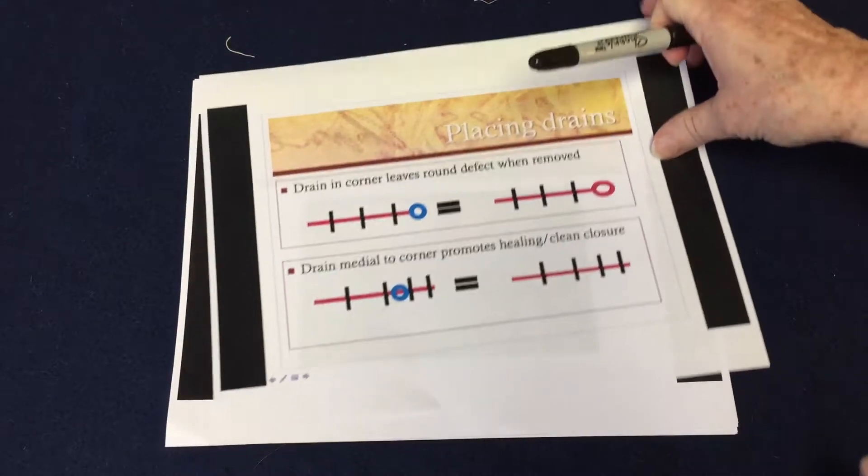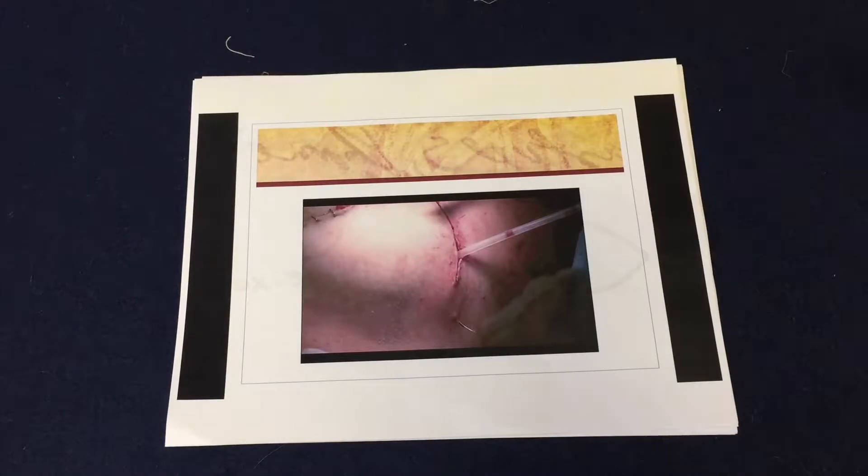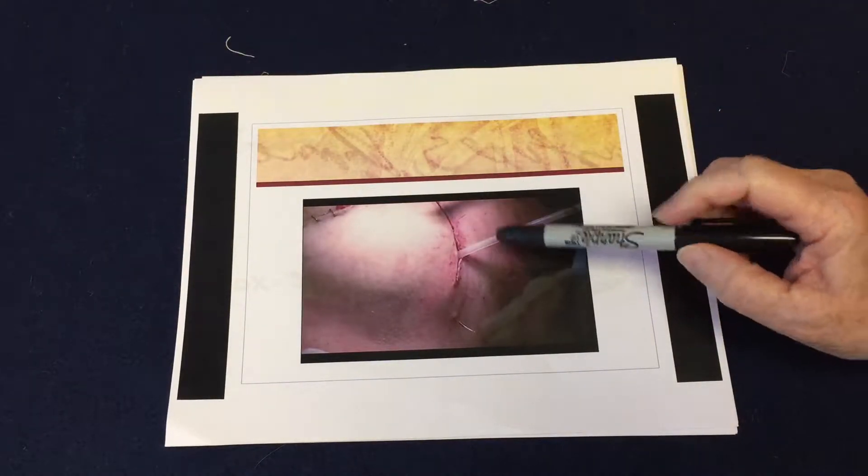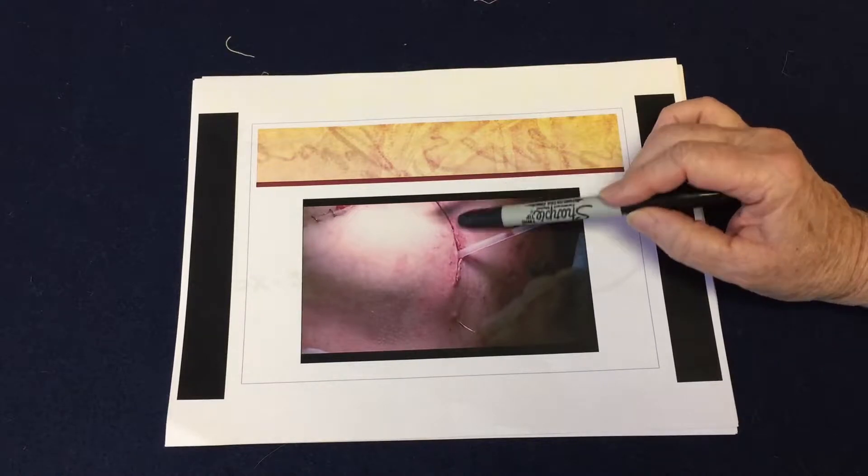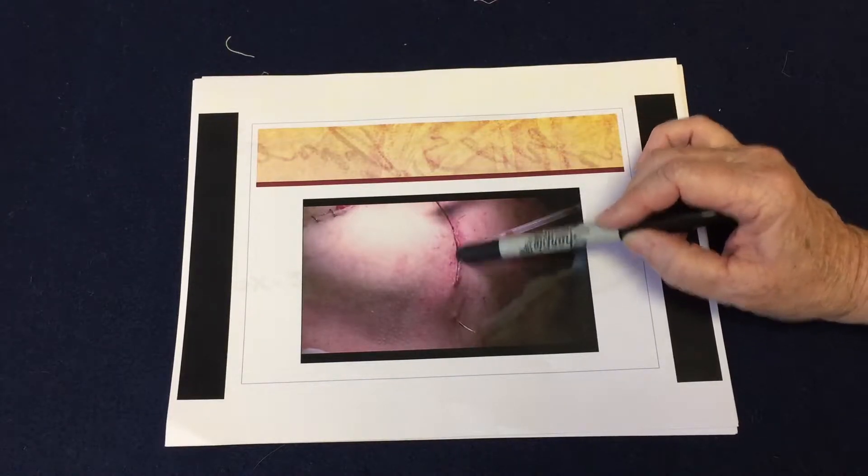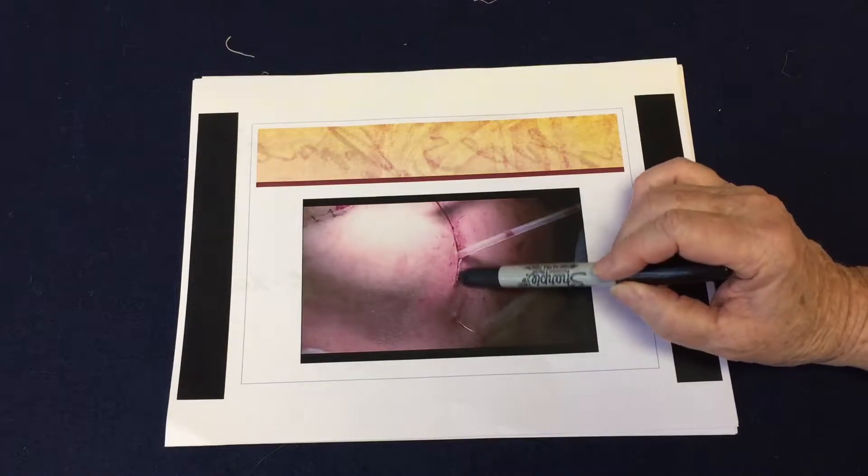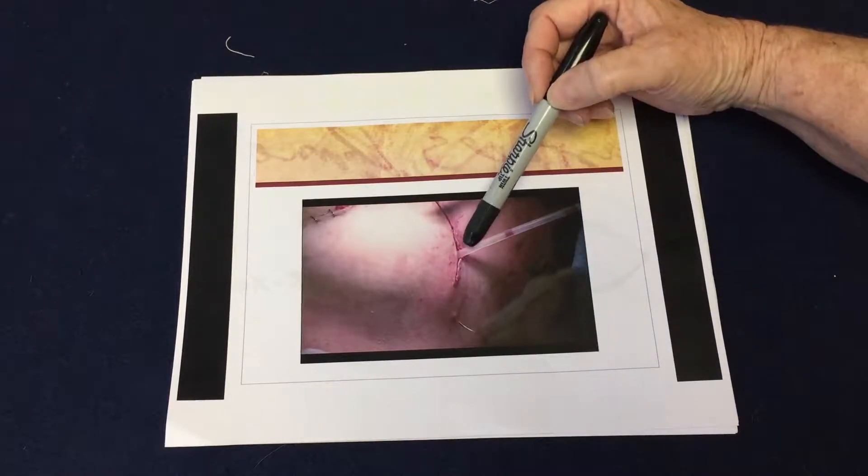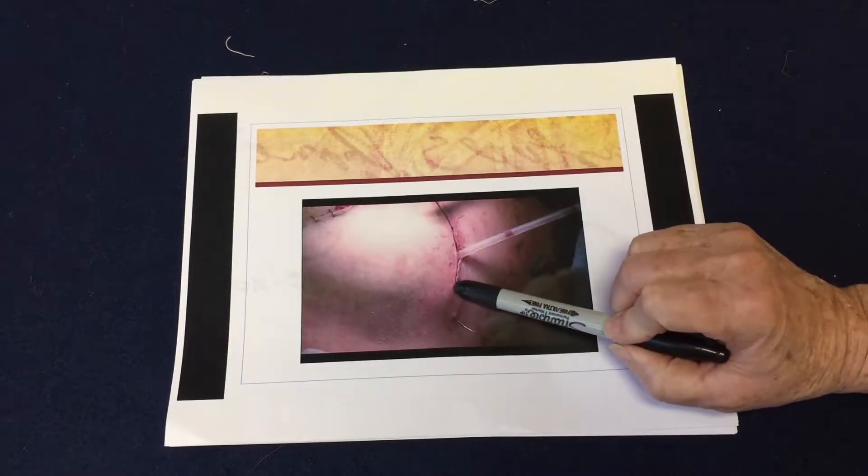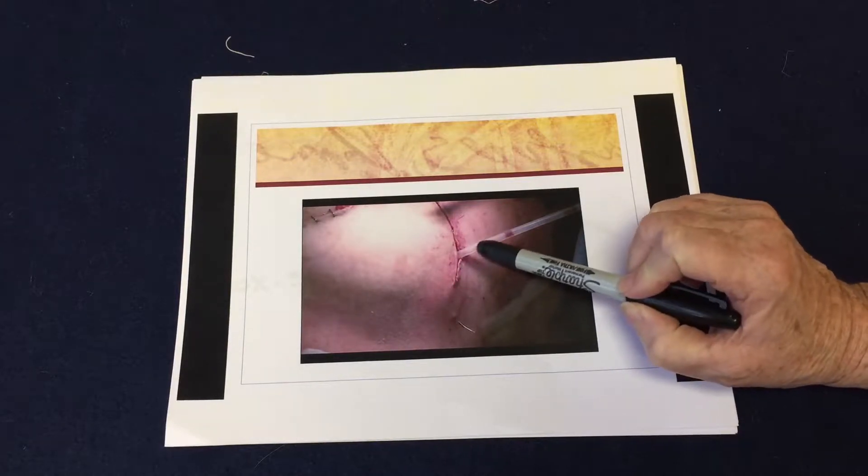Now I had this on my video, but maybe you can see it closer. So you see here, I don't think I've done my running subcuticular here yet on this one, this is just deep dermals, but that's how close you can get them. So I do deep dermals here, keep it medial to the corner of the incision, and you can see how if you pull this out that this would be a nice straight closure.